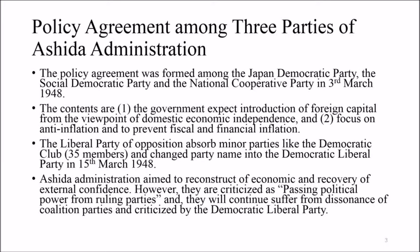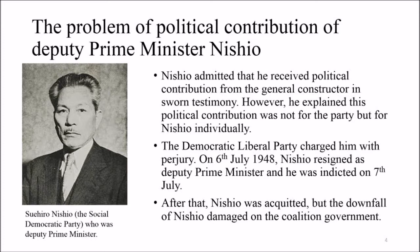Regarding the problem of the political contribution of Deputy Prime Minister Nishio, Nishio admitted in sworn testimony that he received a political contribution from a general contractor. However, he explained this contribution was not for the party but for himself individually. The Democratic Liberal Party charged him with perjury on 6th July 1948. Nishio resigned as Deputy Prime Minister and was indicted on 7th July. He was later acquitted, but the downfall of Nishio damaged the coalition government.